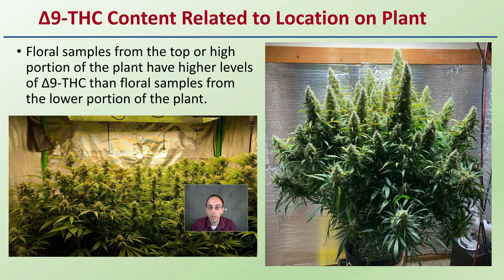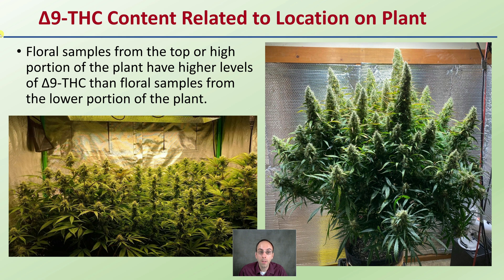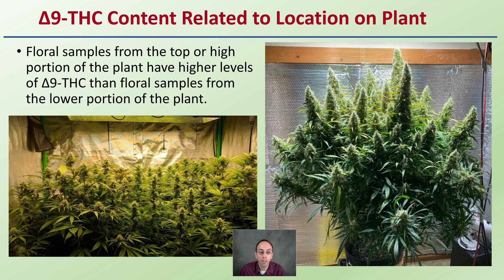Regarding THC content related to location on the plant: floral samples from the top or high portion of the plant have higher levels of Delta-9 THC than floral samples from lower portions. This can correlate with the amount of light they're getting exposed to versus the lower buds. This is why some growers choose pruning methods that try to get as many buds pointed towards the light as possible, to maximize their cannabinoid production in those floral parts.